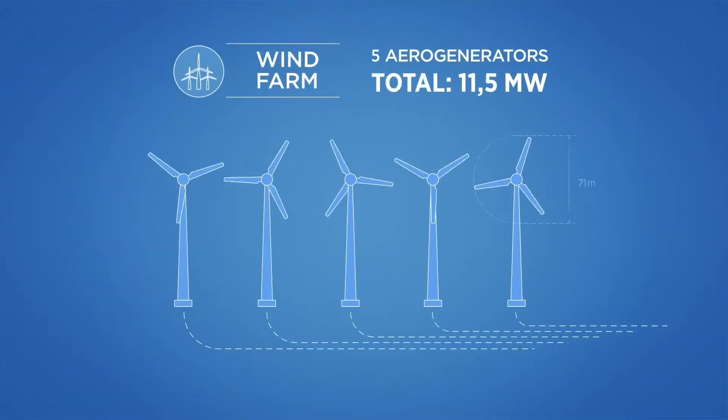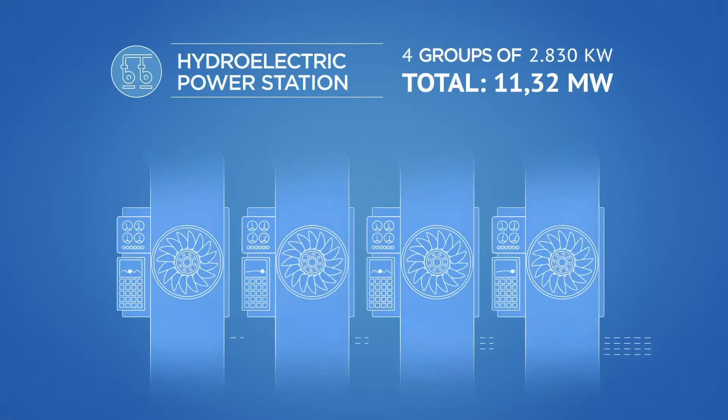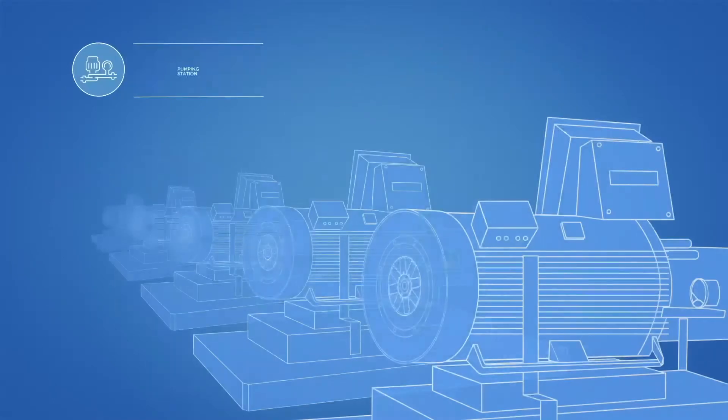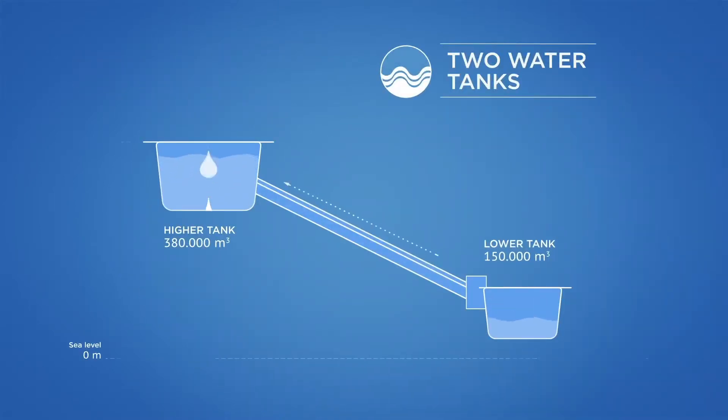The power plant comprises the following: a wind farm, a hydroelectric power station, a pumping station, and two water tanks at different heights.